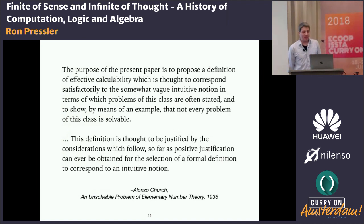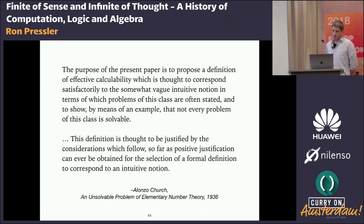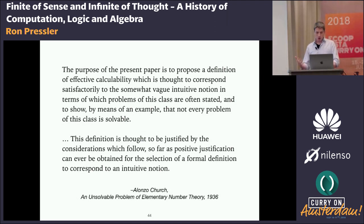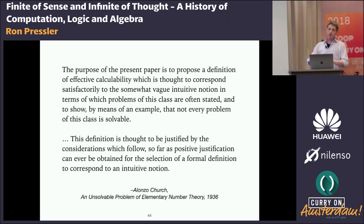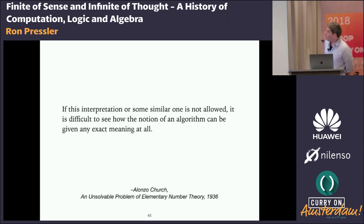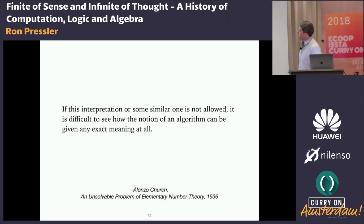In 1936, Alonzo Church — a logician at Princeton — published a paper where he uses a formal system of his own invention and that of his students, the lambda calculus, to demonstrate how, if we define a mechanical calculation to be what's expressible in his language, then some questions are indeed beyond the decision power of such a system. The advantage of his language was that it greatly simplified all the previous formal languages people used to discuss both logic and computation, to something basic that feels almost fundamental. But there was a hole in his reasoning that required him to make a circular argument. He noted it in a footnote: 'If this interpretation or some similar one is not allowed, it is difficult to see how the notion of an algorithm can be given any exact meaning at all.'